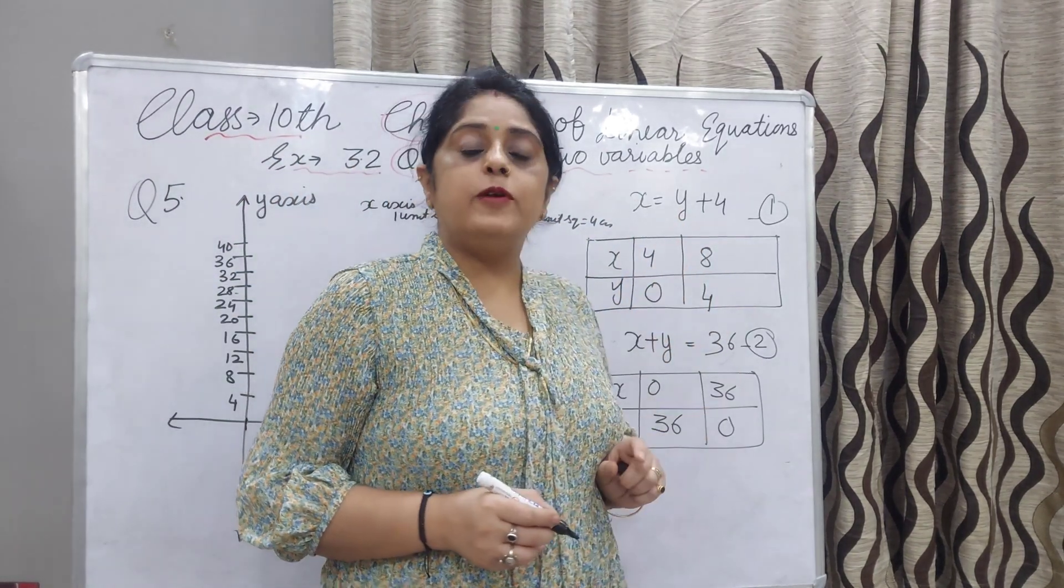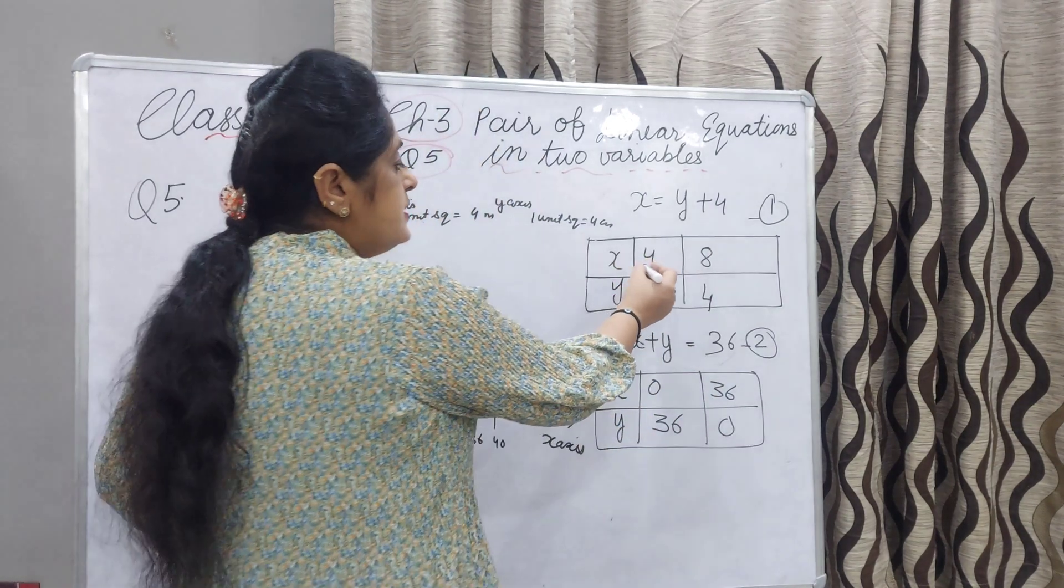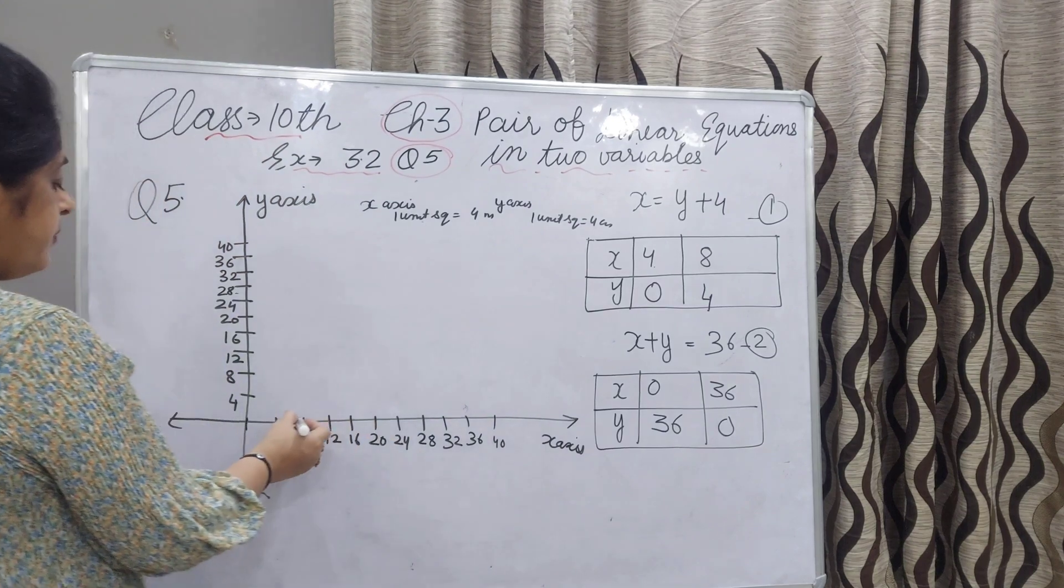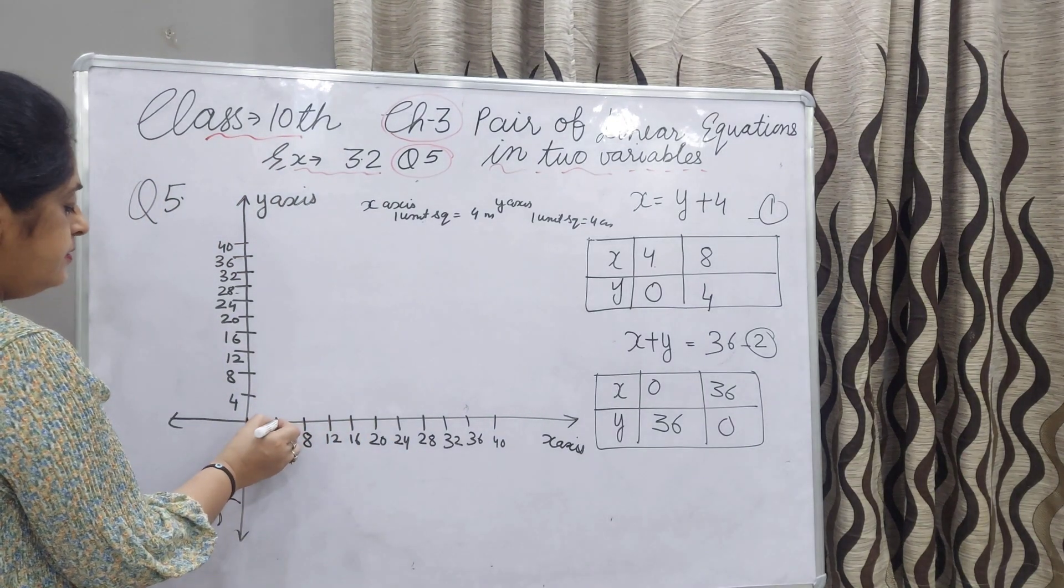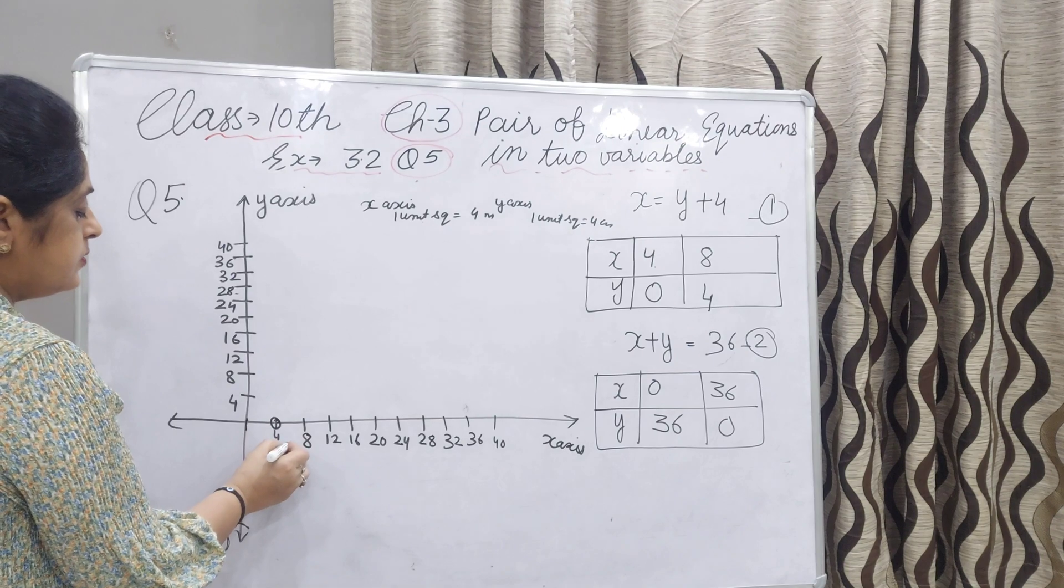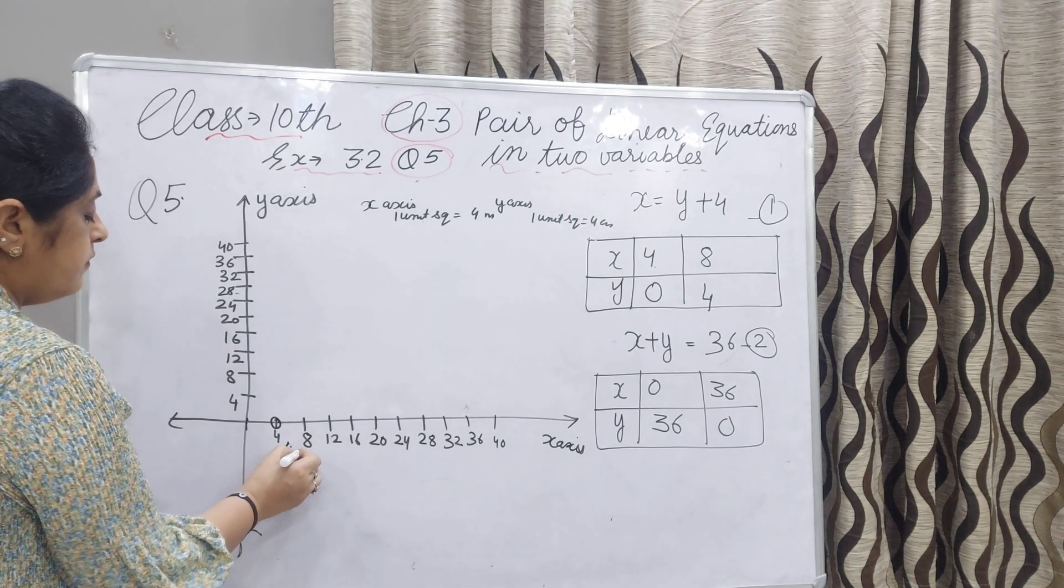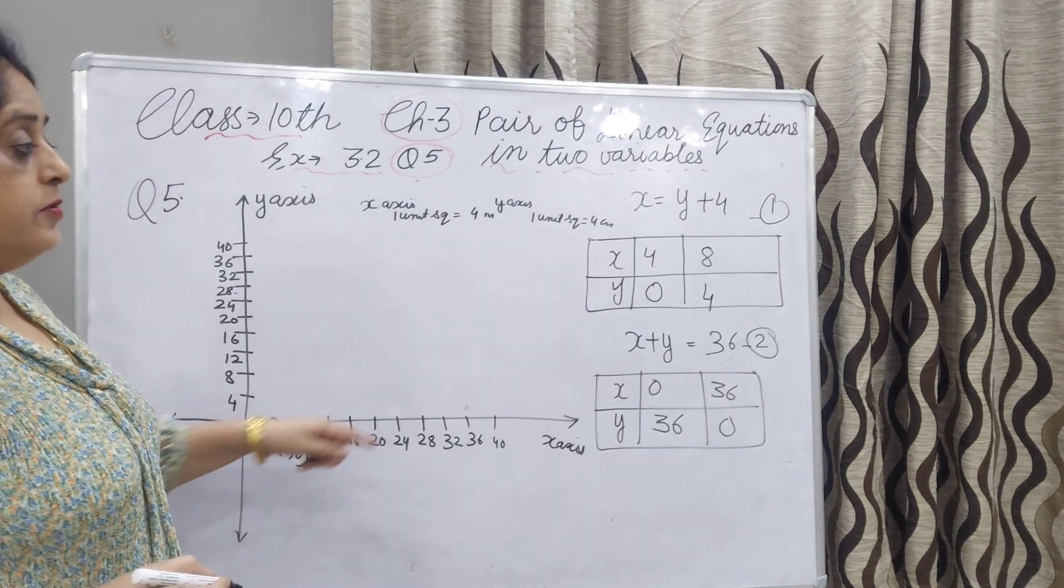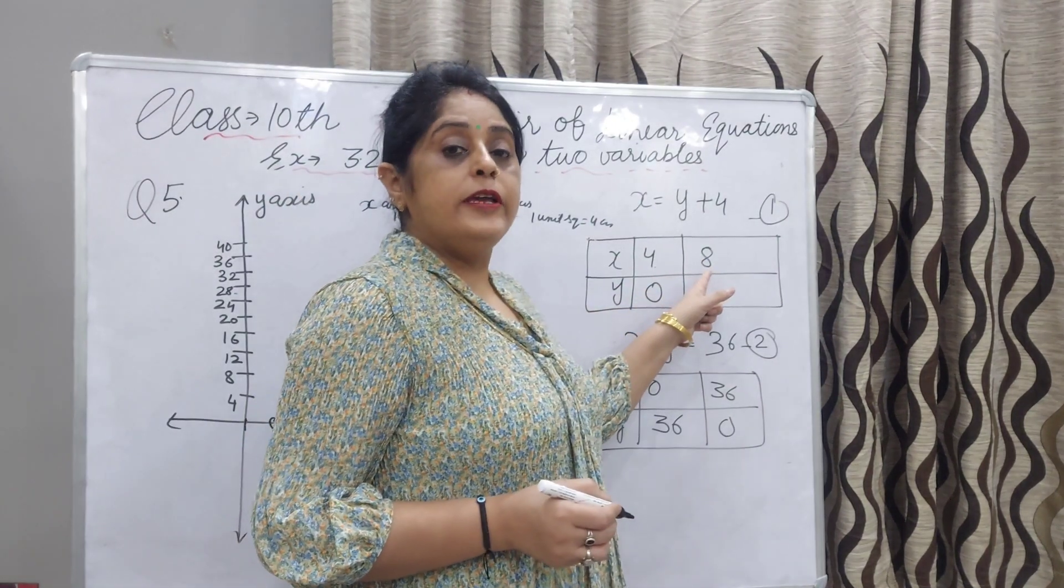Now this is our first equation, x is equal to y plus 4. First value we will take: x 4, y 0. This is the point on x axis, y 0. We write 4, 0. Coordinates I have written: 4, 0.